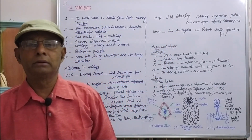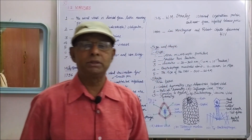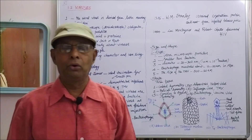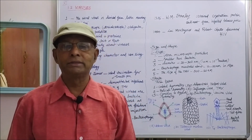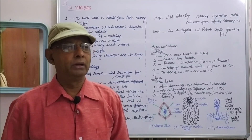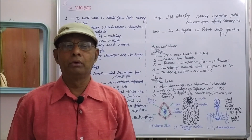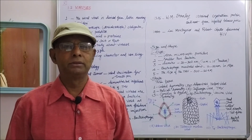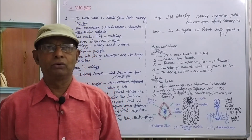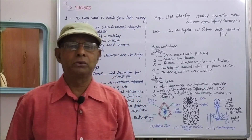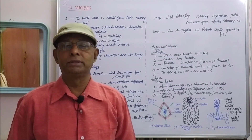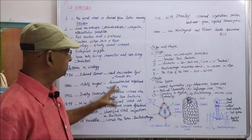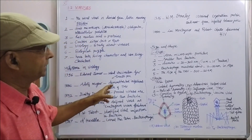In the year 1984, Luc Montagnier of the Pasteur Institute, Paris, and Robert Gallo of the USA discovered HIV — Human Immunodeficiency Virus — the virus that causes AIDS disease in human beings.